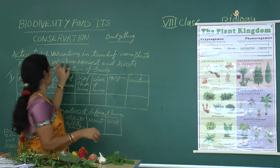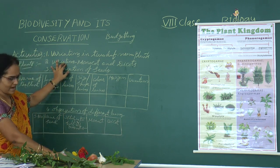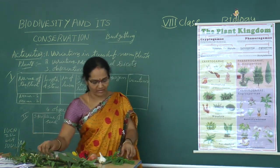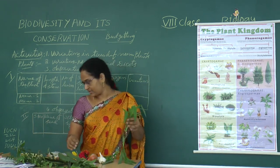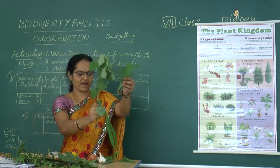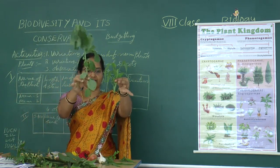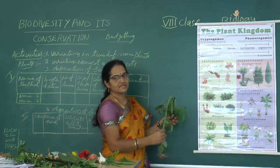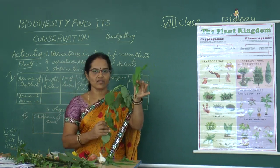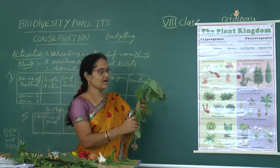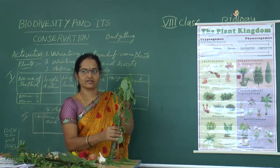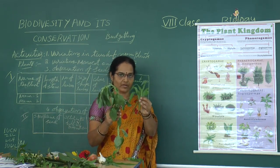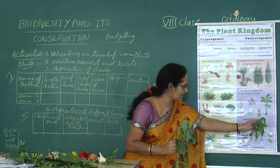The next activity is variations in monocots and dicots. Look at the picture and chart. Mono means single, and 'cot' means cotyledon. The plants with a single cotyledon are known as monocots, and the plants with two cotyledons are known as dicots.